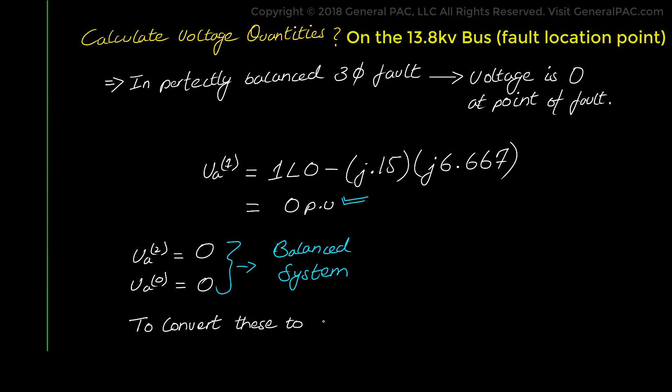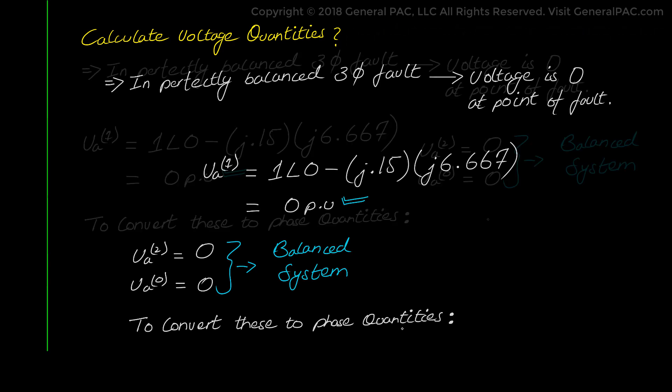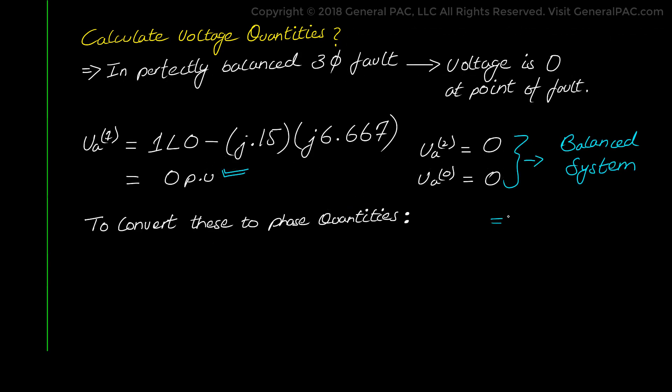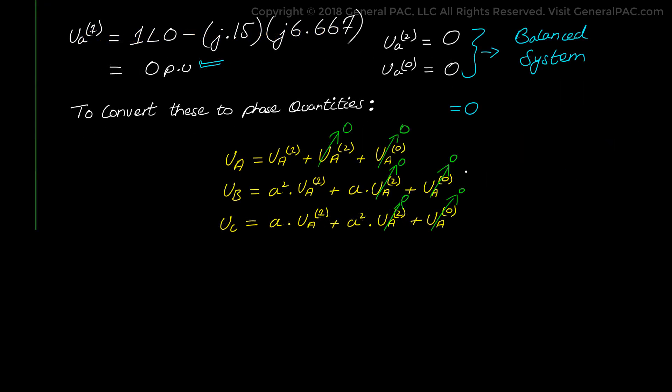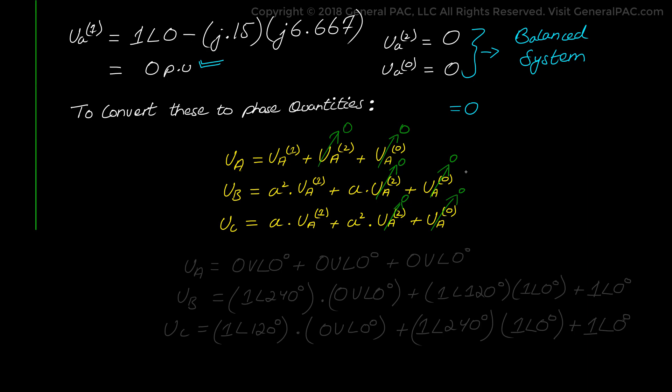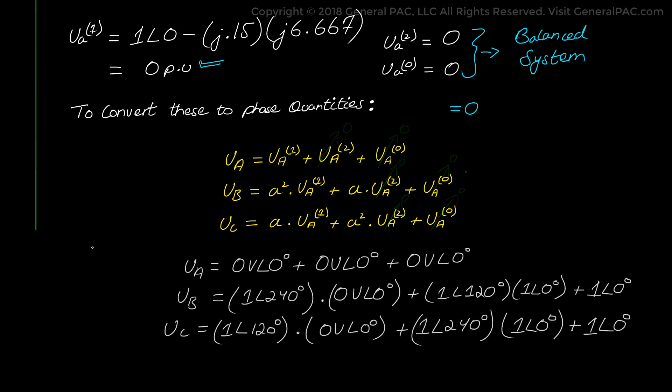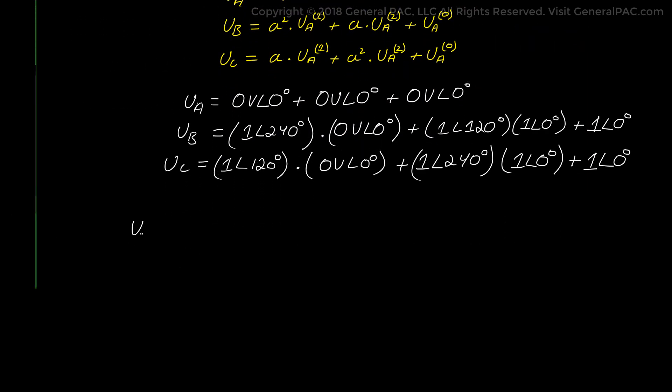To convert these quantities to phase quantities or phase voltages is really trivial because it's going to equal zero as shown below. And remember these are the same matrix as the current quantities. We plug in the values and solve for the math. Voltage on A, B, and C on the 13.8 kV bus are simply zero.